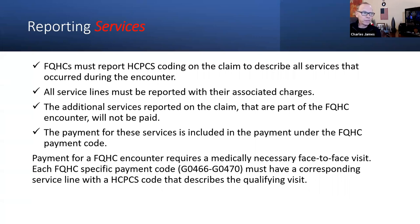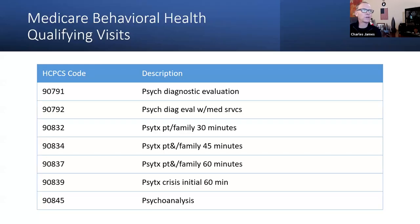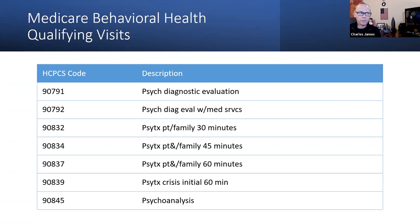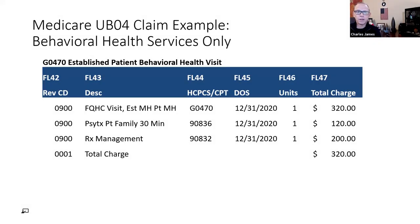The payment for the FQHC encounter requires us to perform a medically necessary face-to-face visit. We assign one of our G payment codes to the corresponding service line that describes a qualifying visit. For Medicare, we have to have one of the seven qualifying visit codes assigned to one of our two FQHC G payment codes for reporting.